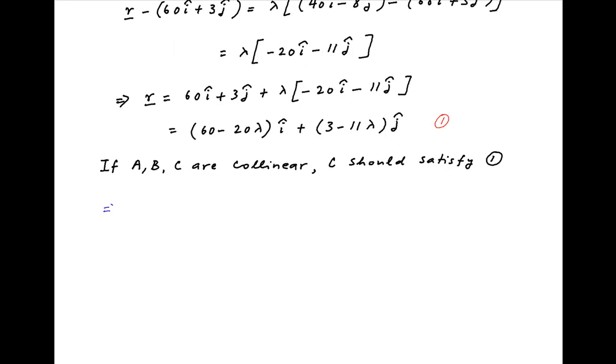Therefore substituting the position vector of point C in equation 1 in place of R we get Ai minus 52j is equal to 60 minus 20 lambda times i plus 3 minus 11 lambda times j.